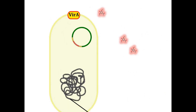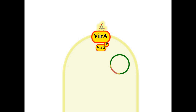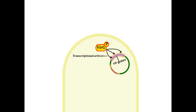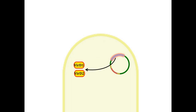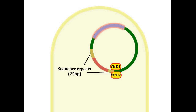The binding activates VirA protein, which in turn activates another protein called VirG through phosphorylation. A number of genes called VIR genes are located on the Ti plasmid, out of which the genes coding VirA and VirG are turned on all the time. The expression of other VIR genes requires VirG as a transcriptional activator. The VirD proteins are endonucleases that cleave 25 base pair sequence repeats flanking T-DNA.